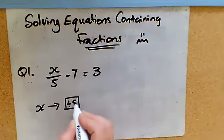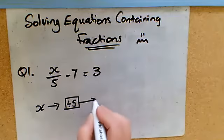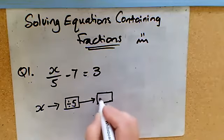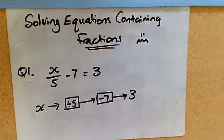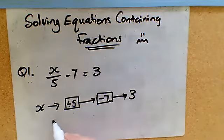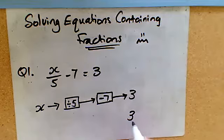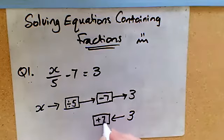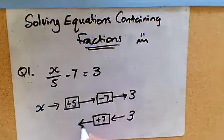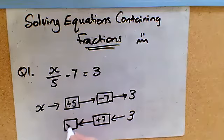We divided x by 5, this bit here, we then took away 7 and out popped our answer which was 3. So if we want to undo this process, when we start with 3 we would have to do the inverse operation. So instead of taking 7 away we would add 7, and then the inverse of dividing by 5 would be multiplying by 5.